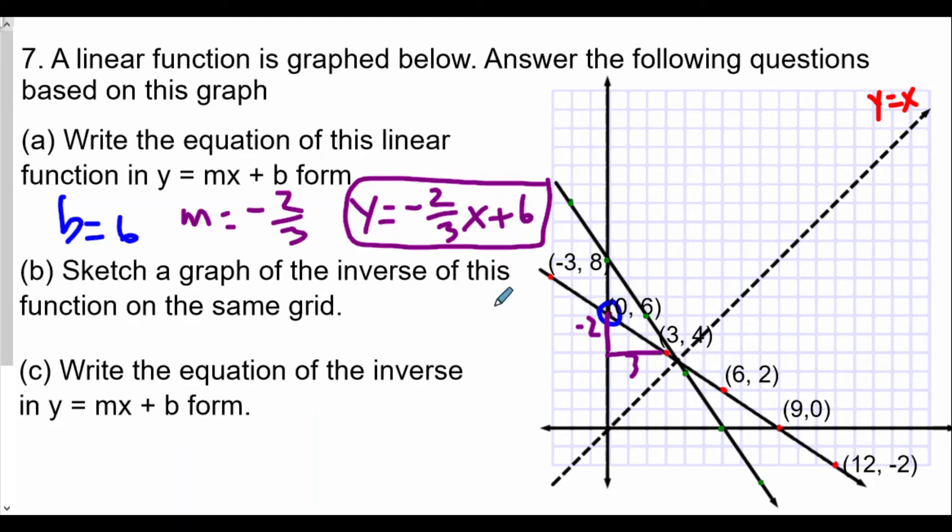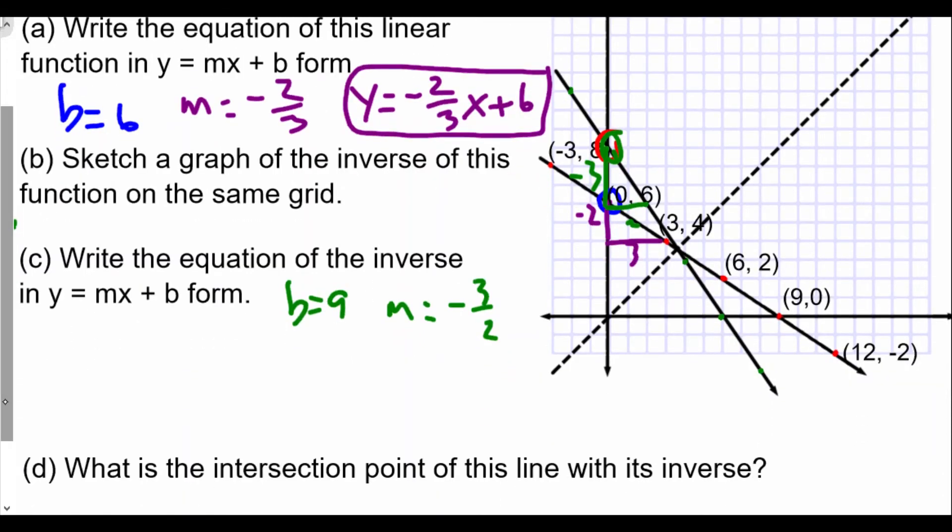Now we want to find the equation of this line, the inverse, in the form y = mx + b. Our y-intercept here looks like 0, 9, so the b value of the inverse will be 9. Our slope is going down 3, right 2, so that's -3/2. Using y = mx + b, we get y = -3/2x + 9. I'll use y inverse to note this as the inverse of the function.